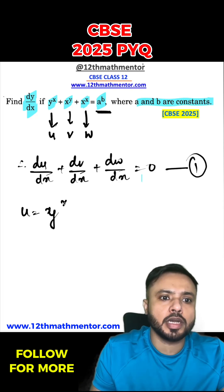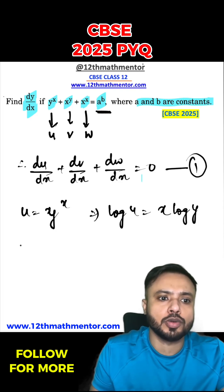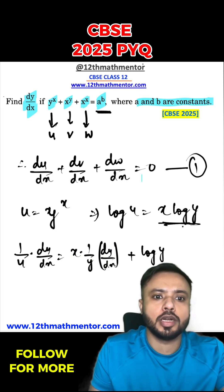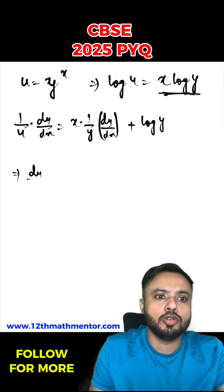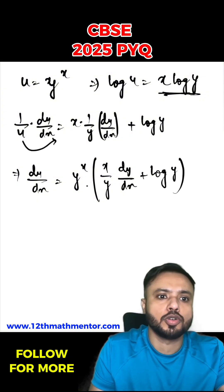So u equals y raised to the power x. Taking log on both sides, log u equals x log y, using the logarithmic property. Differentiating both sides with respect to x, 1 upon u times du by dx equals x times 1 upon y times dy by dx plus log y, using the product rule. Therefore, du by dx equals y raised to the power x times (x upon y times dy by dx plus log y). This is equation number 2.